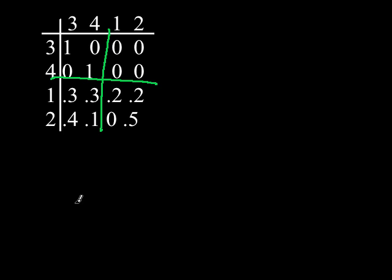Sometimes the identity matrix here will just be a 1. Also, sometimes the matrices O, R, or Q may only consist of one entry.